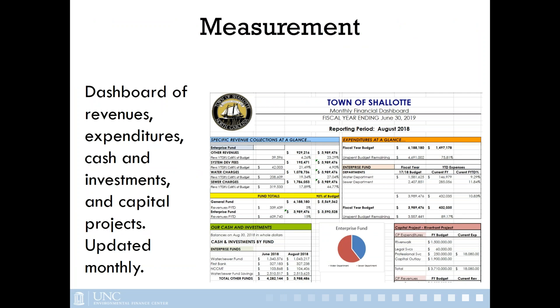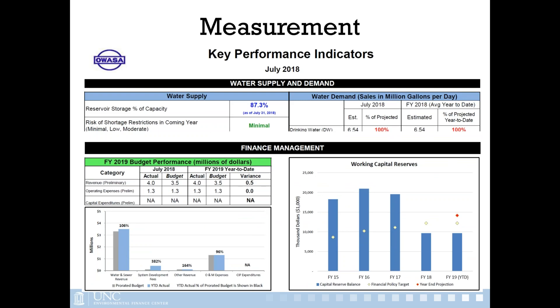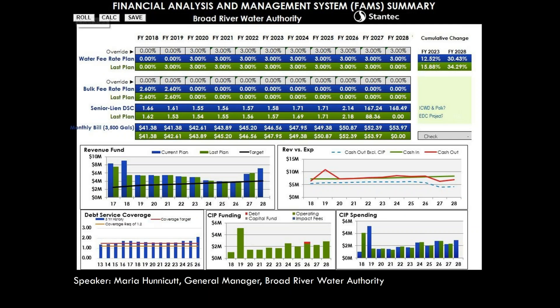Some systems use visual dashboards to share targets and actual performance with their board, which is easier to communicate than tables. This is from the town of Shalak, and one from OWASA shows their targets and how they measure themselves against those targets. At this point I'm going to switch over to Maria Honeycutt to talk about Broad River Water Authority's financial targets and implementation.